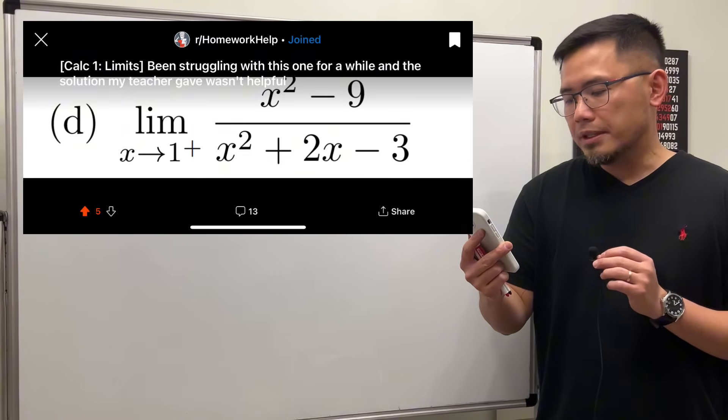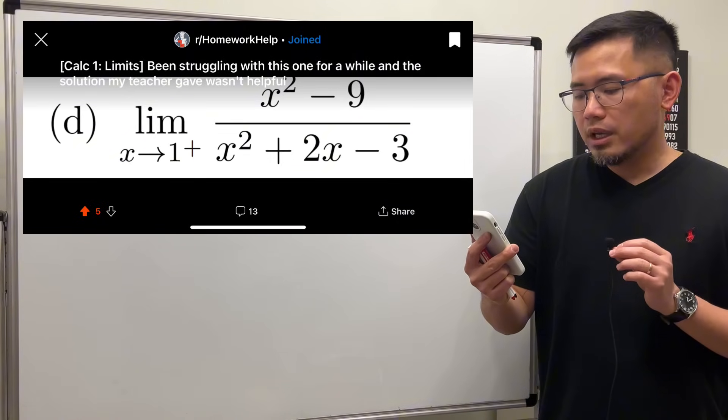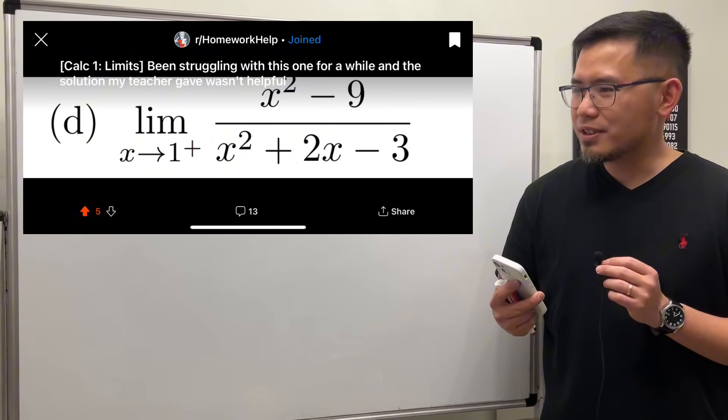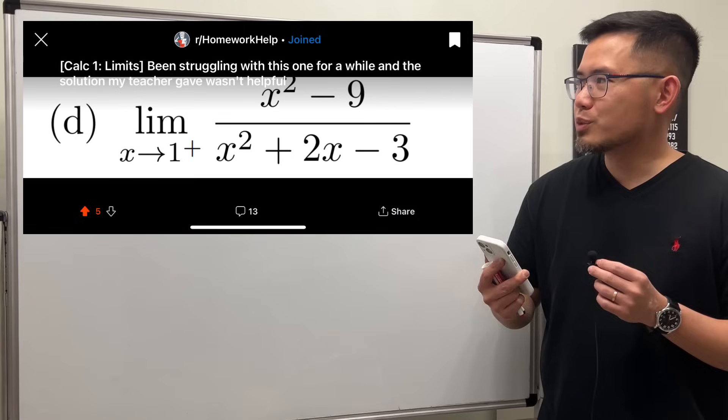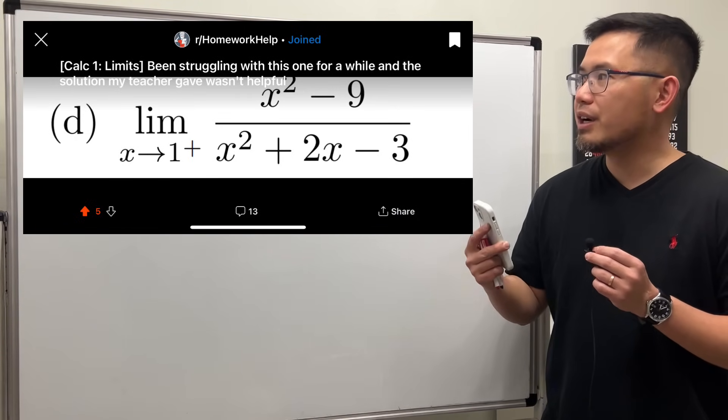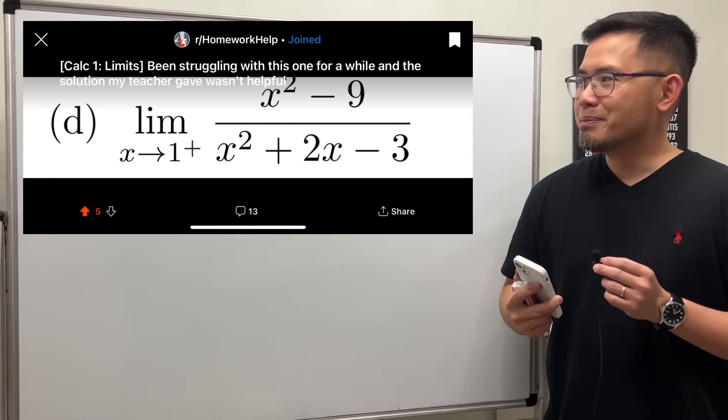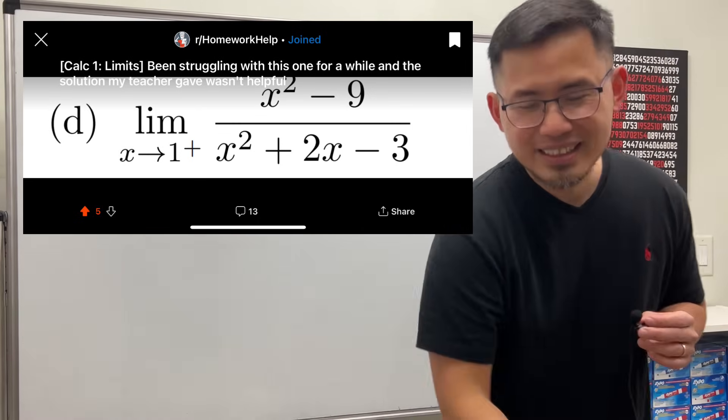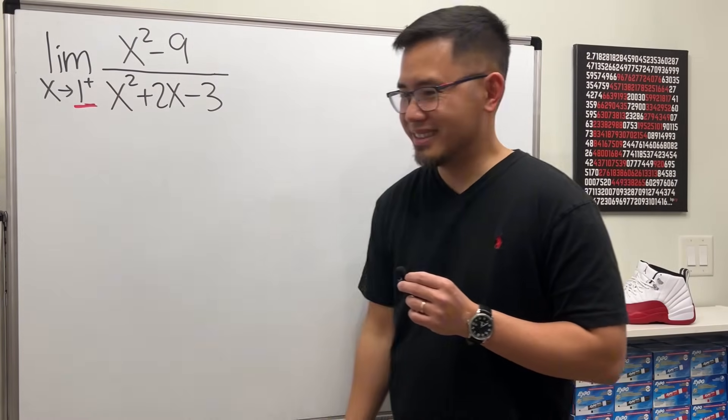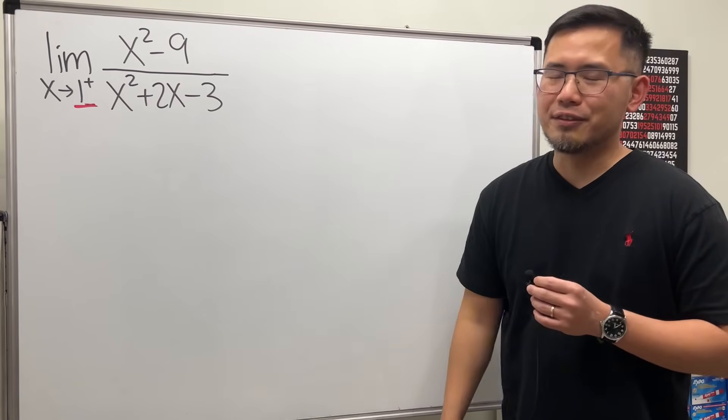Calculus one limits, been struggling with this one for a while and the solution my teacher gave wasn't helpful. When I first saw this question I thought it was an easy question because we can factor the top and bottom and cancel out the common factor x plus three, but I realized the question is asking us x is approaching one plus, so you don't really have to factor anything.